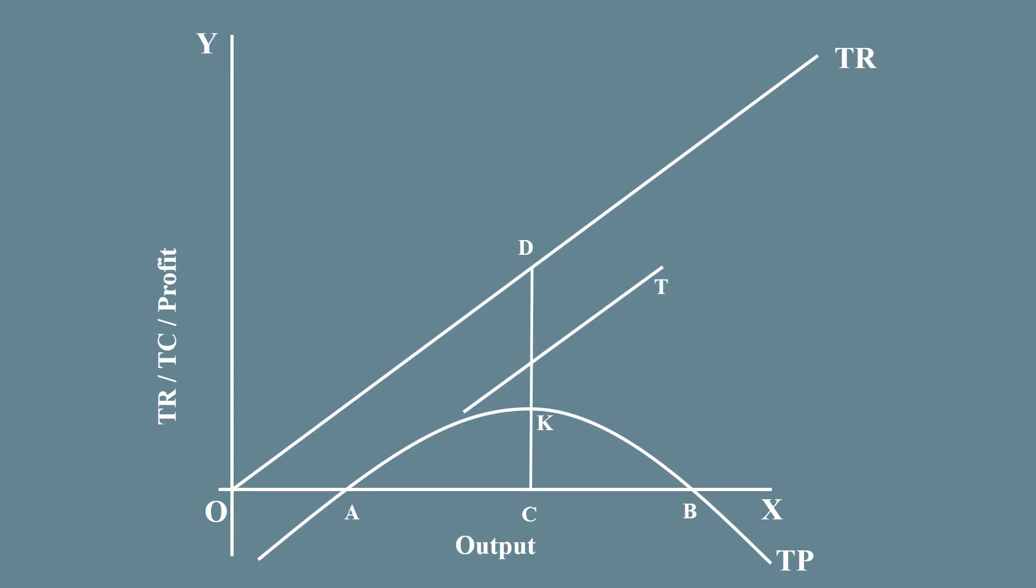Draw a perpendicular line from point A to TR and name it as E. Again, draw a perpendicular line from point B to TR and name it as F. Choose a point along the Y axis just above the origin and well below point E and name it as G.